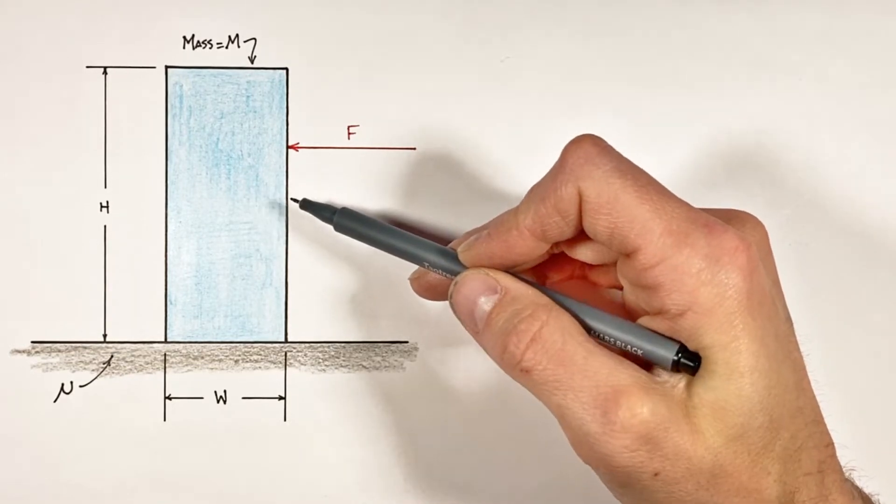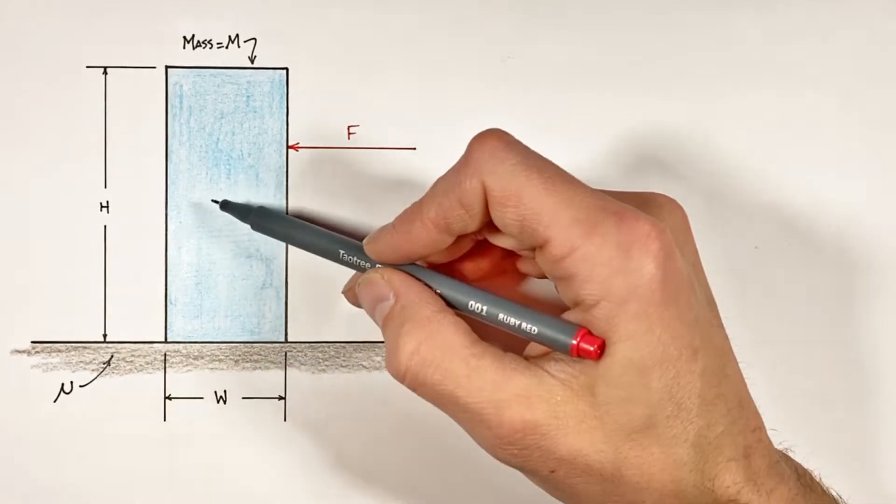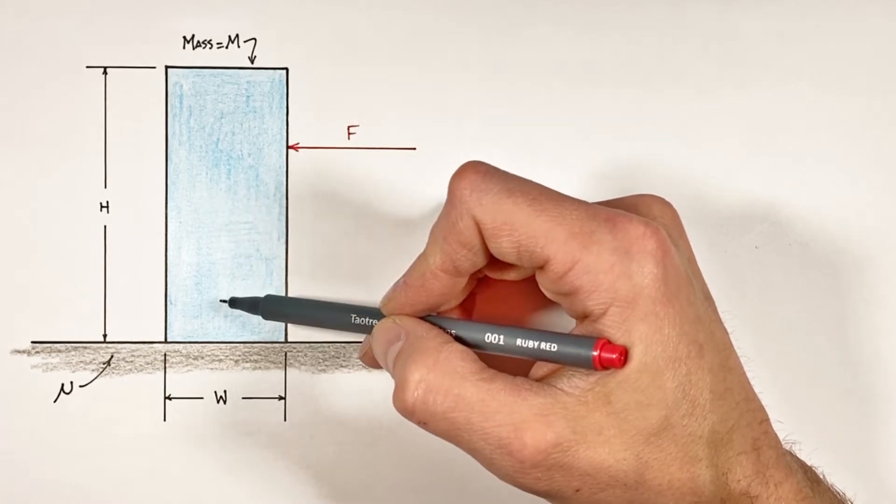First, this block has some mass, which means gravity is going to be pulling on the center of mass downward.